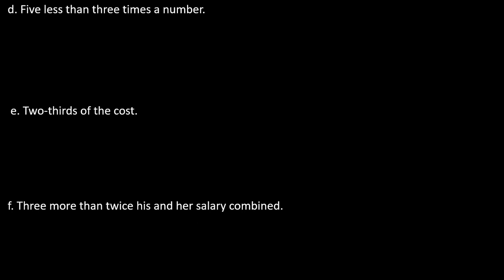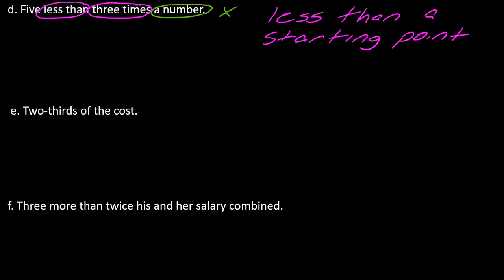So I have three more here. If you want to try these out, you can pause the video and then hit play when you're ready. Okay. So D, five less than three times a number. Once again, we're going to let this number be X. And then we've got three times. So that's indicating multiplication. And then we have that less than again. So remember, you want to tell yourself that this is less than a starting point. Now, in this case, our starting point is a little more complicated. The starting point is three times the number. So the starting point will be 3X. And now I take five away from that. So this will be 3X minus five.